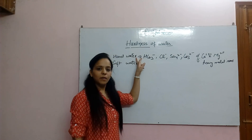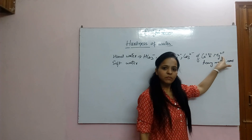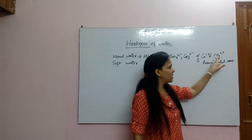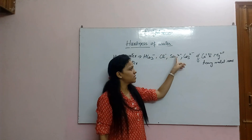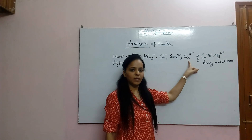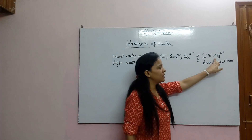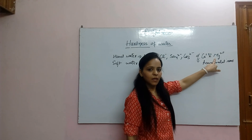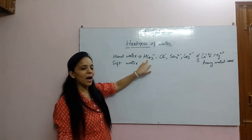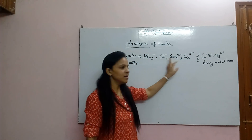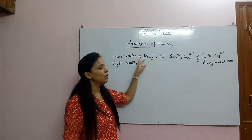Hard water का मतलब है ऐसा पानी जिसमें calcium और magnesium जो metal ions हैं, उसके bicarbonate, chloride, sulfate और carbonate ions present हों। या कोई भी heavy metal ions हों, उनके bicarbonate, chloride, sulfate और carbonate ions present हों — तो वो hard water है।